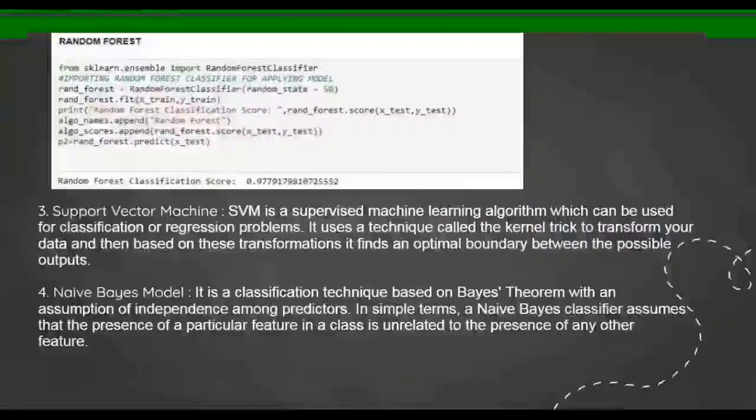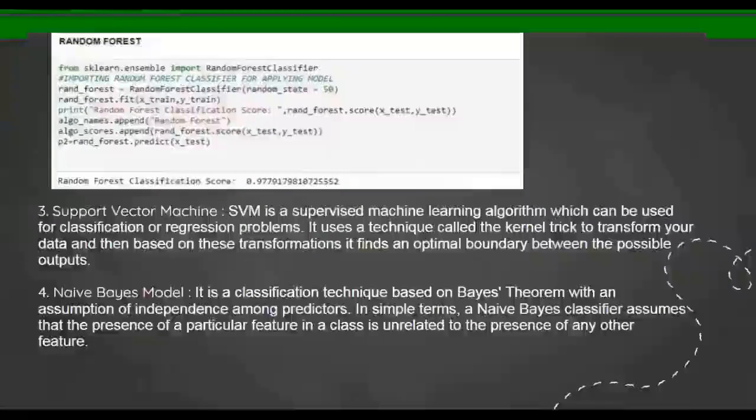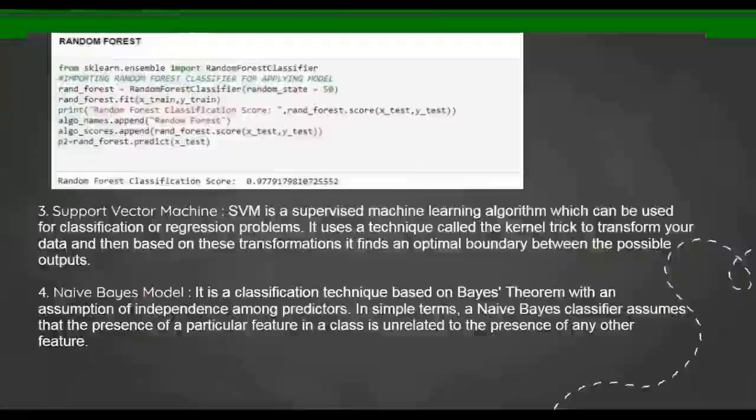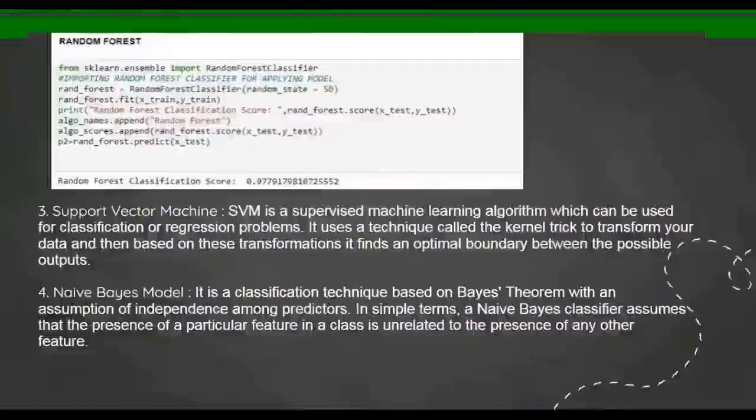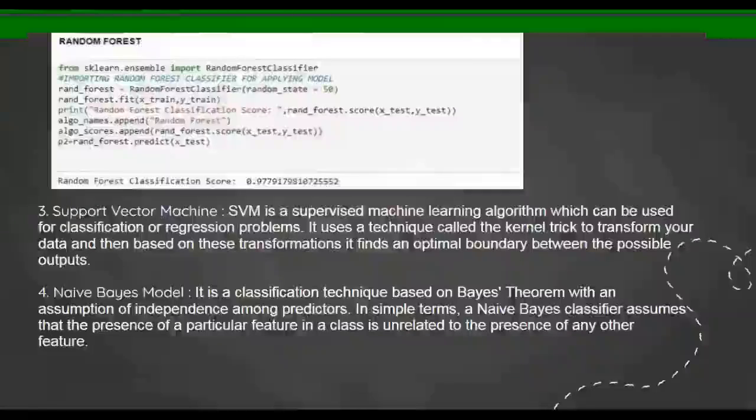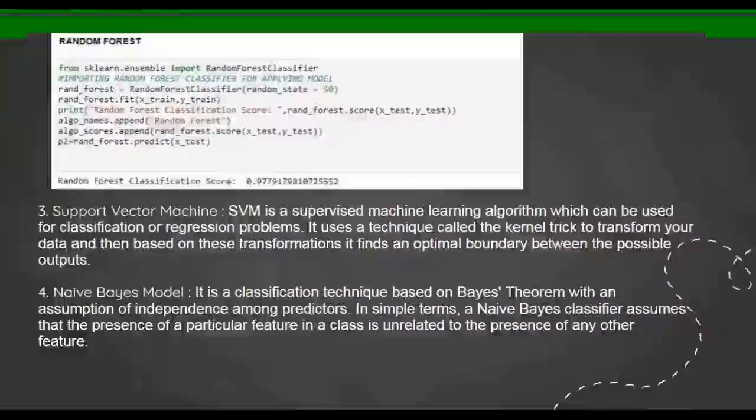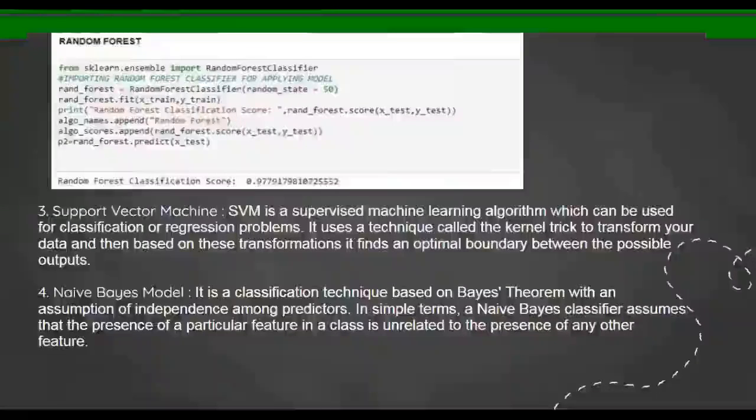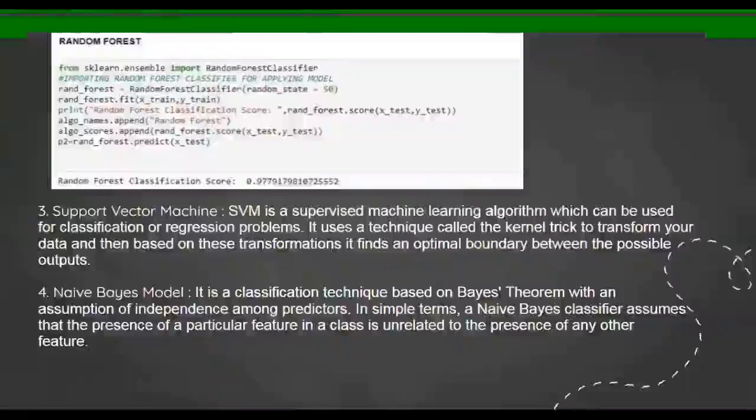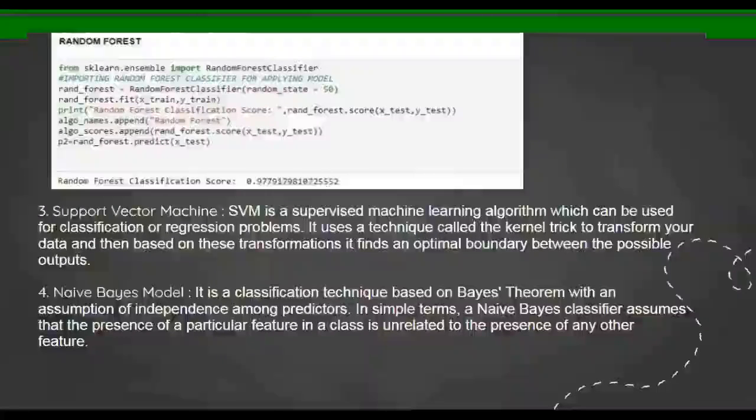The third model is Support Vector Machine (SVM). SVM is a supervised machine learning algorithm which can be used for classification or regression problems. It uses a technique called the kernel trick to transform data, and then based on these transformations it finds an optimal boundary between the possible outputs. Basically in simple terms, in SVM we are creating a barrier between the two classes. If you draw a graph using SVM, we can see clear planes between two different planes consisting of the two classes we are defining.